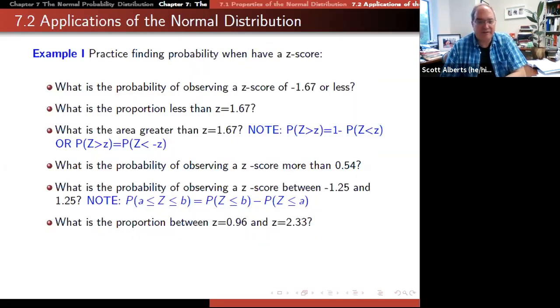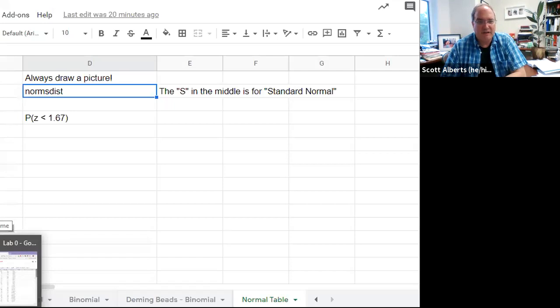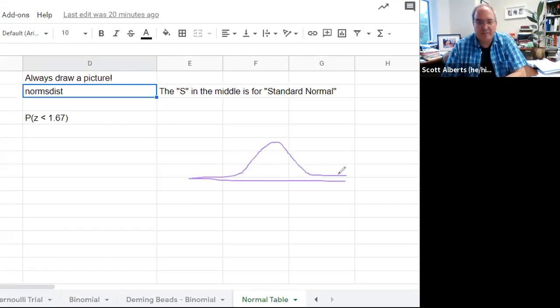We're going to do this actually in a spreadsheet instead of doing it here. My first advice is that you should always draw a picture. So whenever you're doing it, draw a picture. This first question asks you, what's the probability that we have a z-score less than minus 1.67? Zero is always in the middle, and minus 1.67 is somewhere over here.